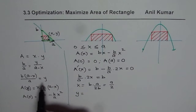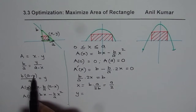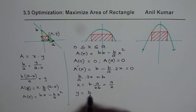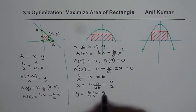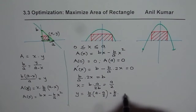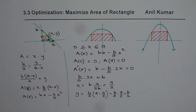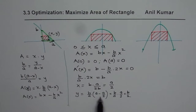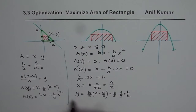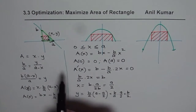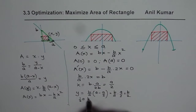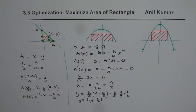Now what is y? The value of y = (b/a)·(a − x) = (b/a)·(a − a/2) = (b/a)·(a/2). The a's cancel, giving y = b/2 — half of the y-intercept. So the dimensions of the rectangle with maximum area are (a/2) by (b/2). That is the size of the rectangle for maximum area.